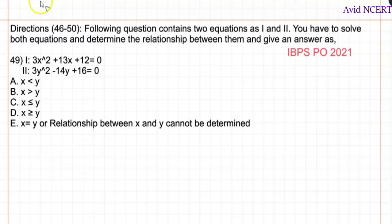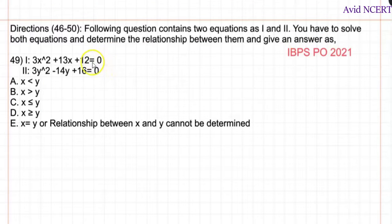Hello viewers, welcome to my channel. This is Geeta. Today I will be solving the 49th problem from the IBPS PO 2021 question paper. We have to determine the relationship between two given equations, so first we need to find factors to factorize each equation.